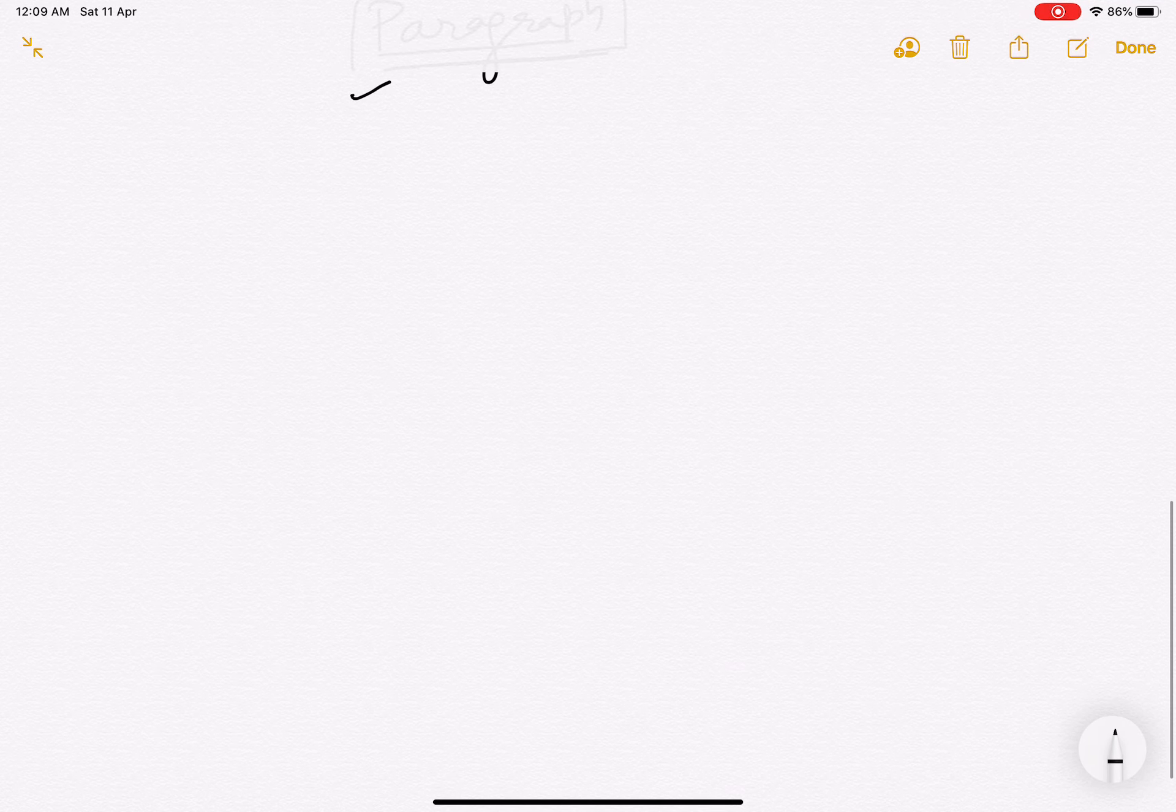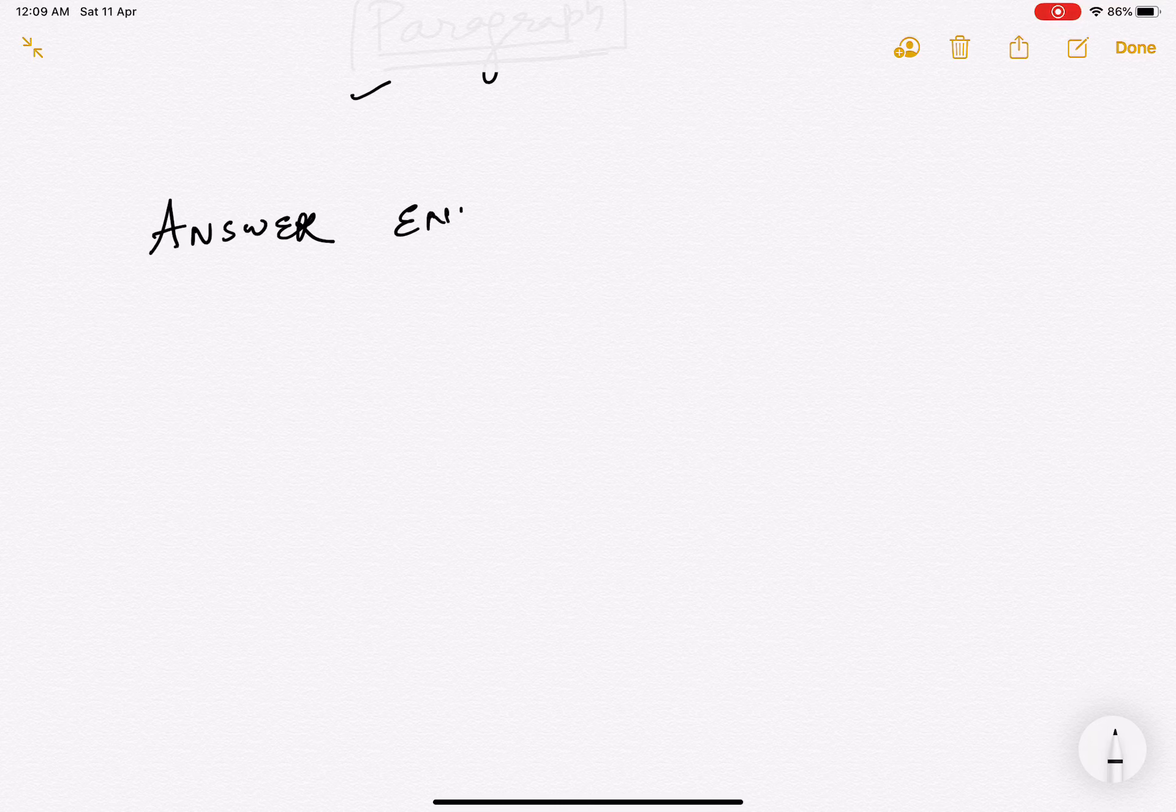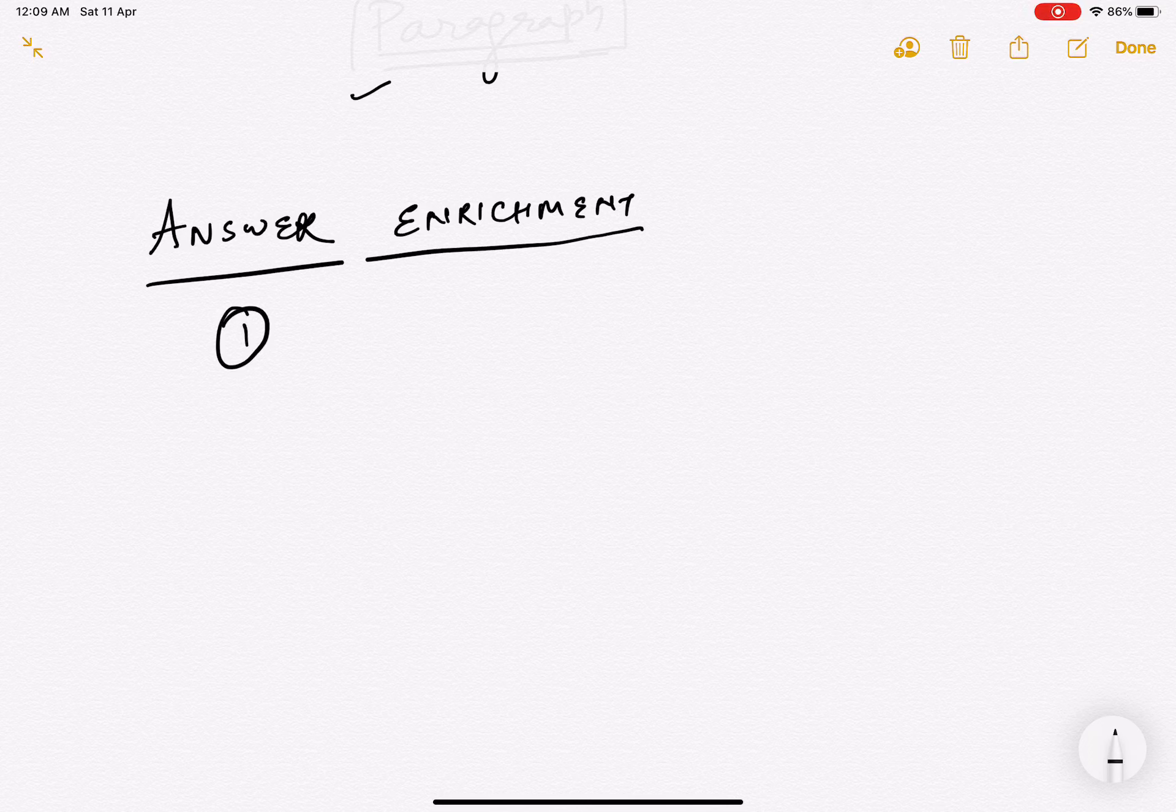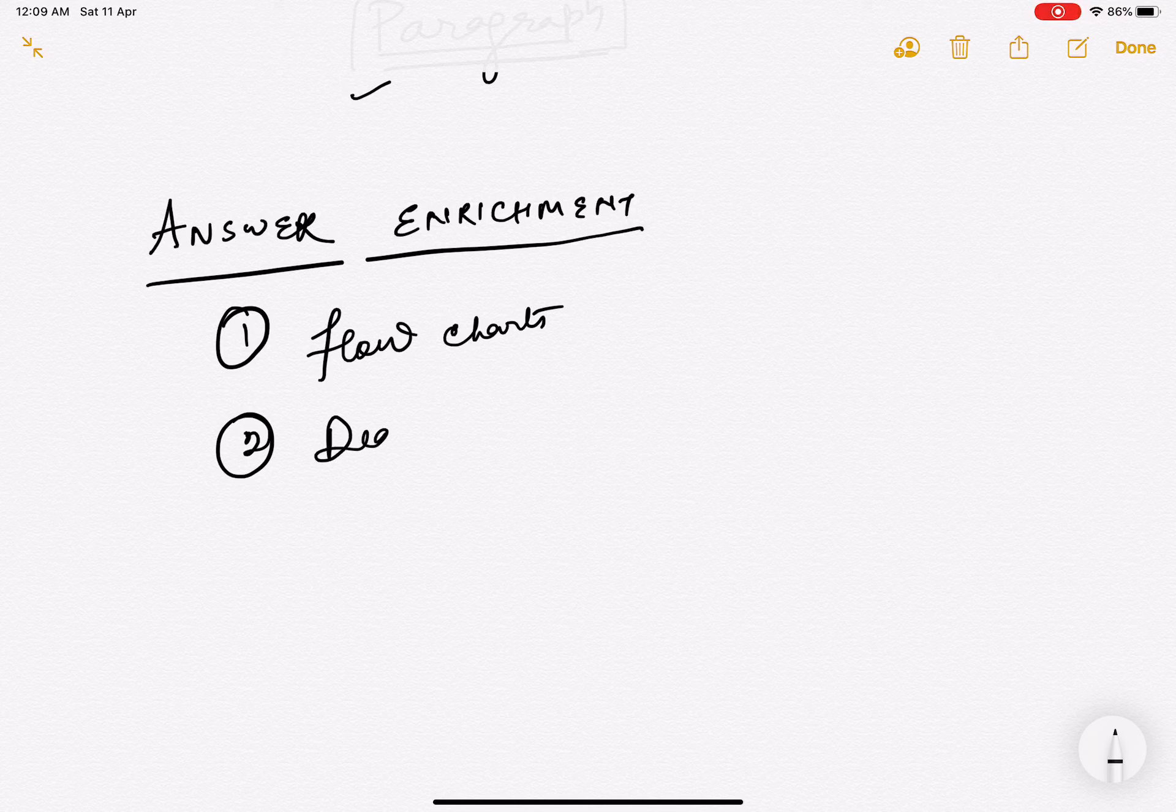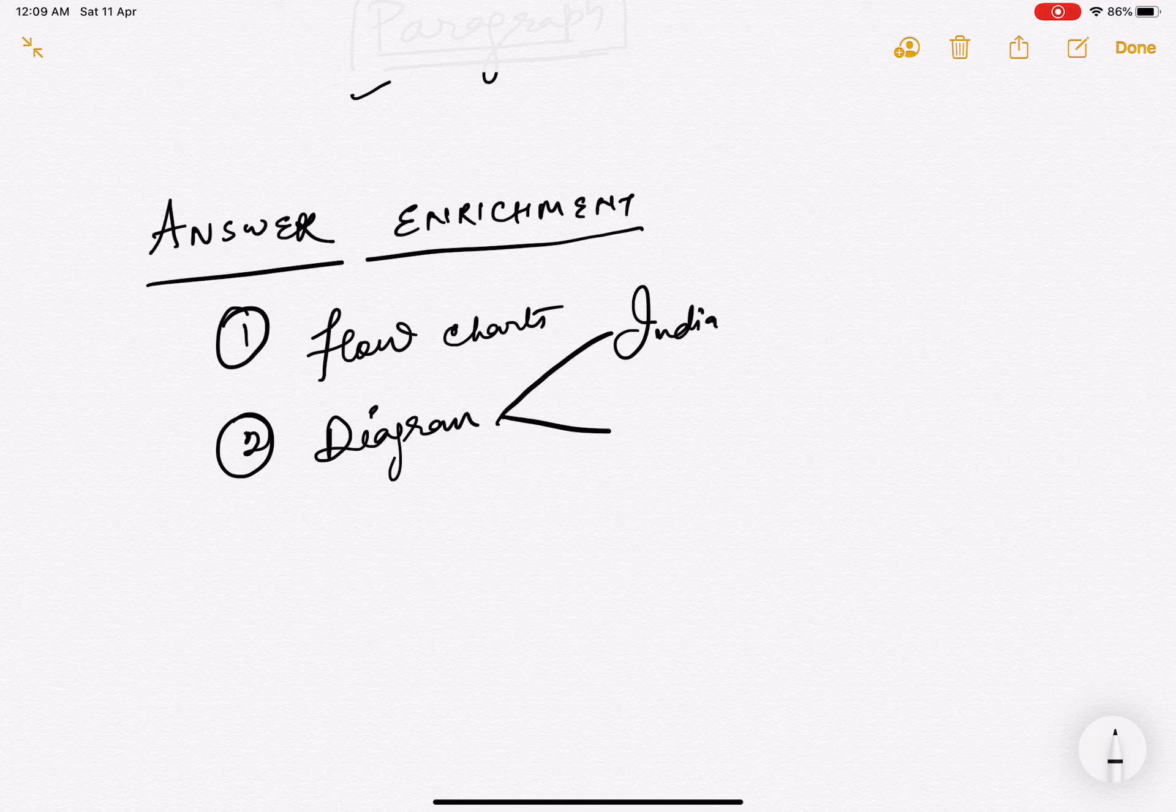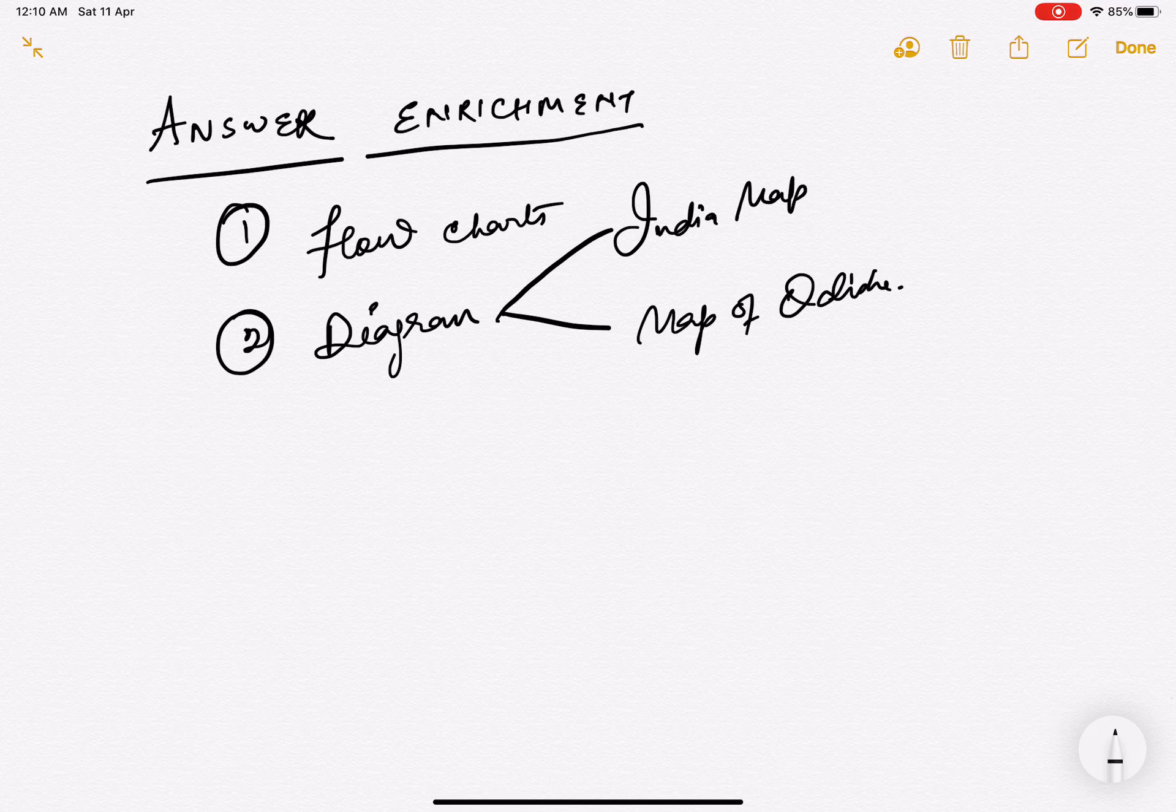When you are writing an answer, there is always the thing of how can we enrich our answer. Answer enrichment can be done number one by adding flowcharts, two by adding diagrams, let's say your India map or your map of Odisha.